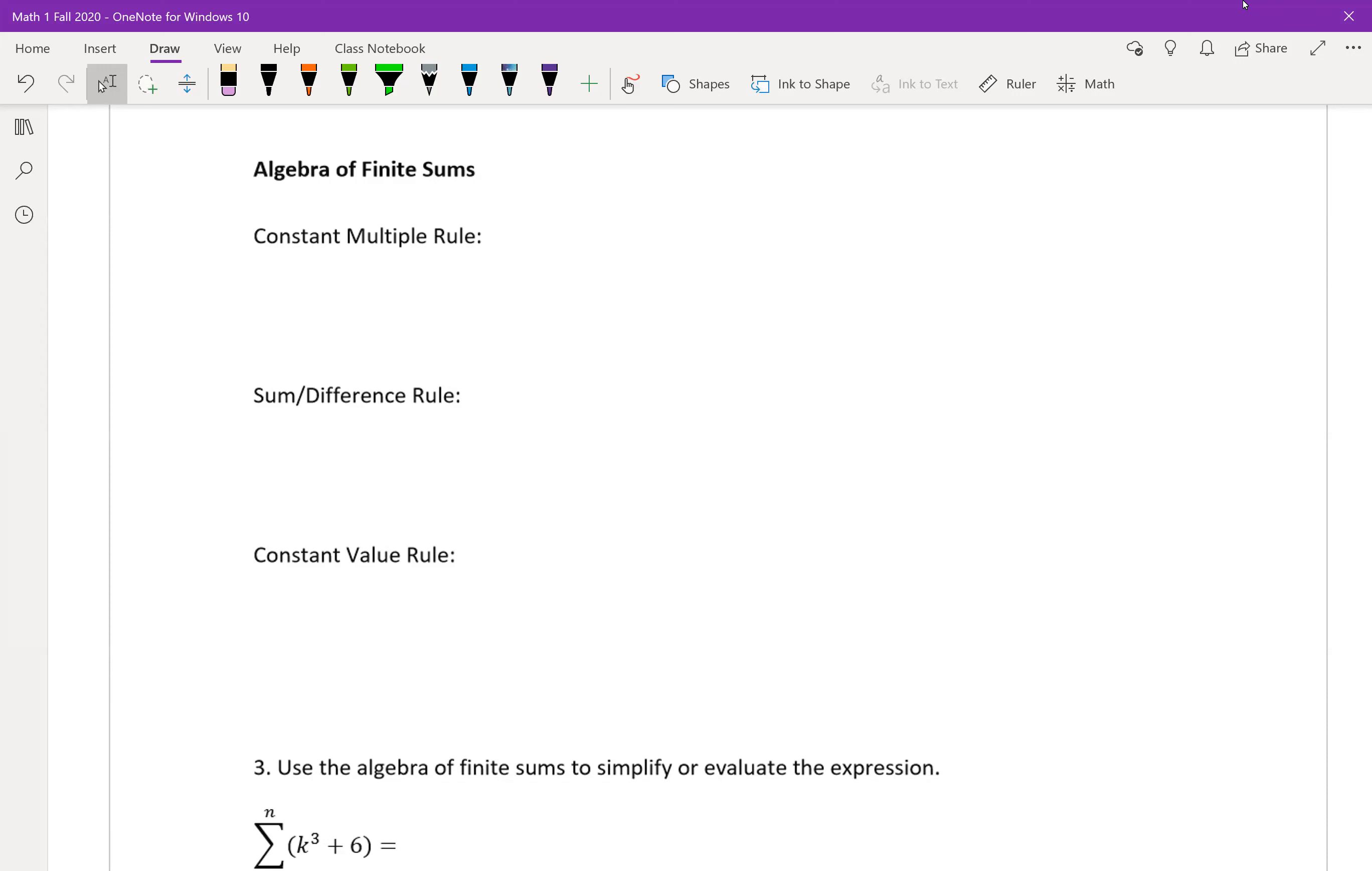And the first rule to know here, the constant multiple rule, is actually something we just looked at in that last example. It says that if you have a summation, we're just going to put in default, like k equals 1 to n.